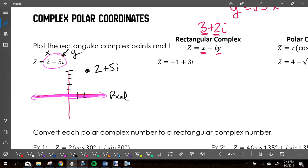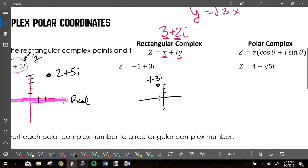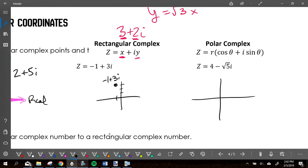Does that make sense how we did that? Do the next one. Negative one plus three I. Graph that guy. Show me with your fingers which quadrant is that guy in. Two. Two. You've got a negative X value, a positive Y value. That's negative one plus three I. And if I wanted to graph this one, it's one, two, three, four, and down five, square root of five. So it's like two and some change.